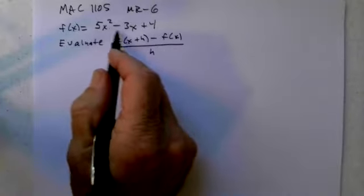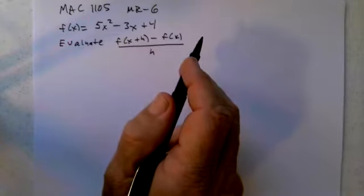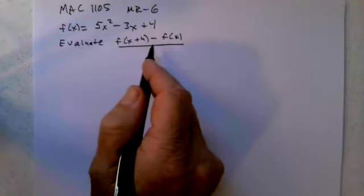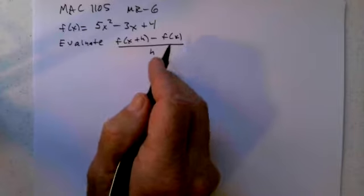This question gives us f(x), which is 5x² minus 3x plus 4. We want to evaluate f(x+h) minus f(x) over h.